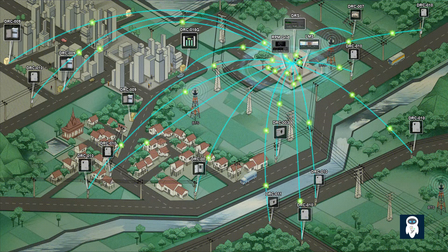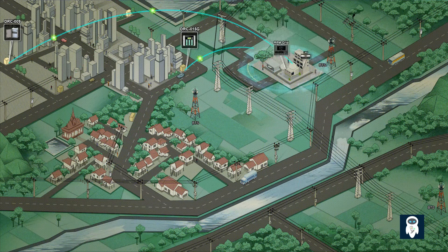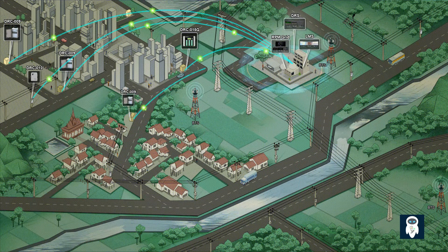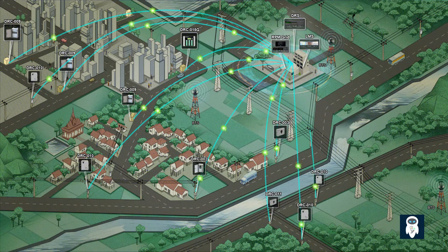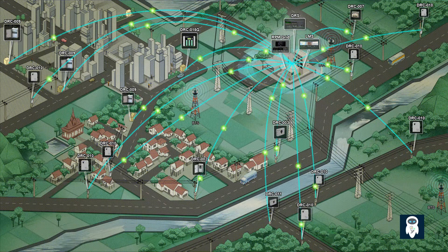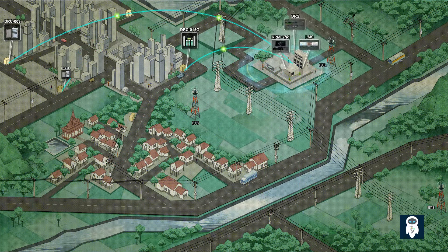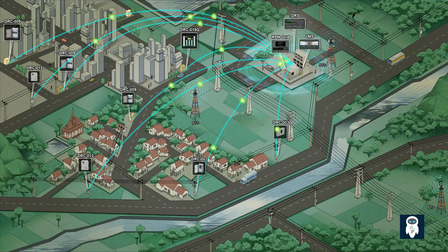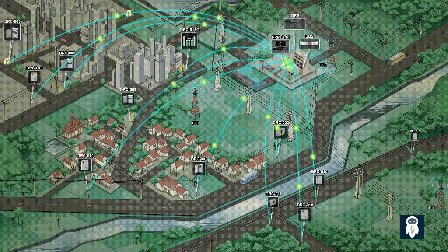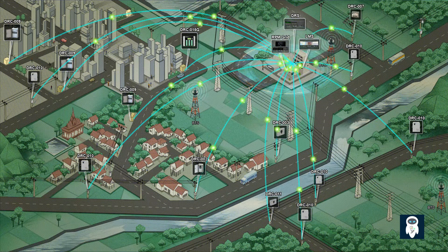In summary, SAIFI and SAIDI are two important reliability indices used in the electrical distribution industry. They provide valuable insights into the number and duration of interruptions experienced by customers, allowing utilities to measure and improve the performance of their networks. Thank you for watching our video on SAIFI and SAIDI in Electrical Distribution Network Performance. We hope you found it informative. If you have any questions or would like to learn more, please leave a comment below.